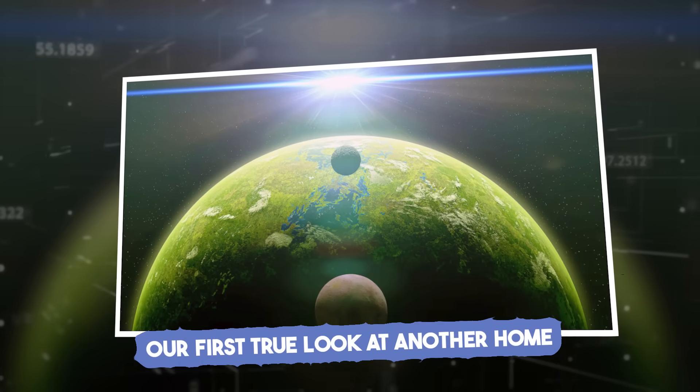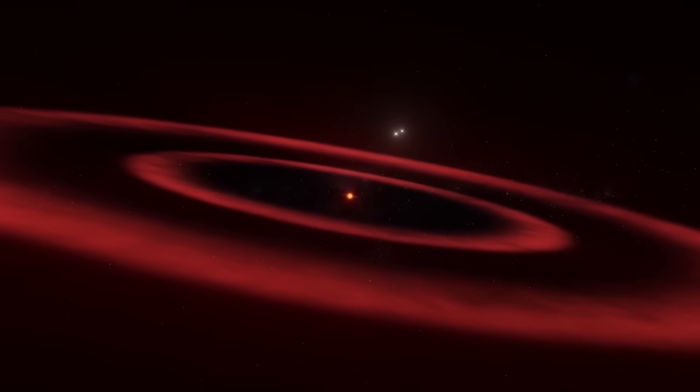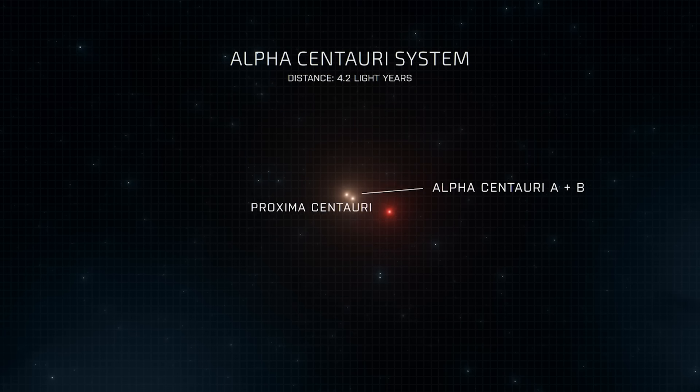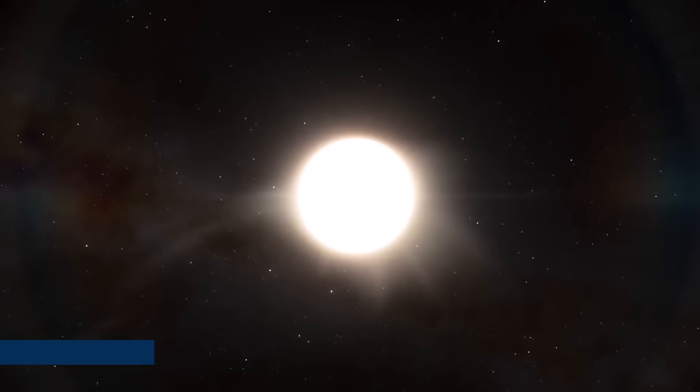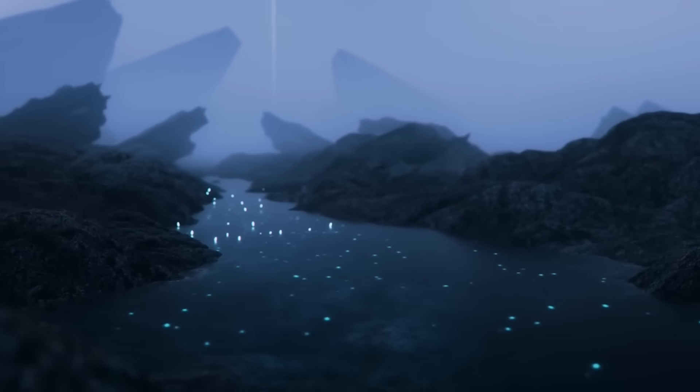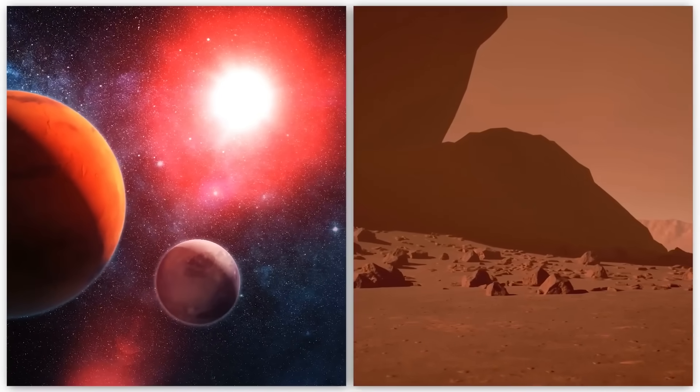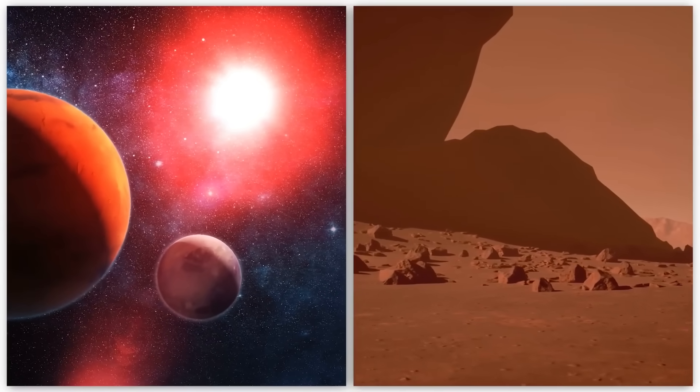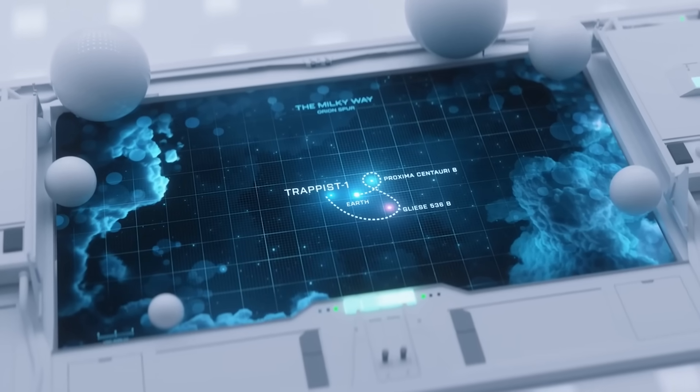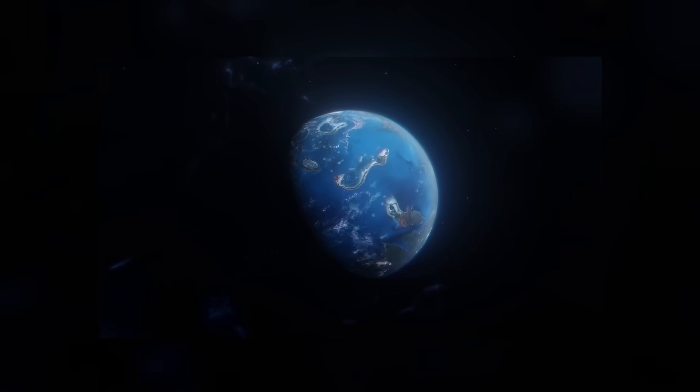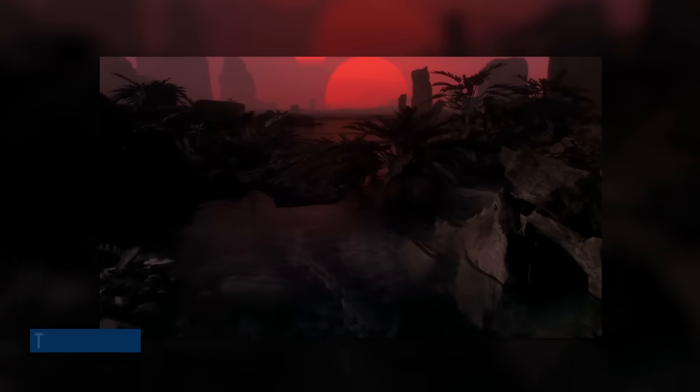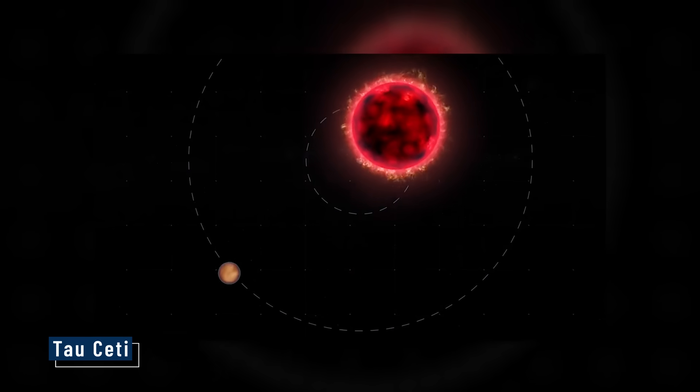Seeing Proxima b like this changes everything. This isn't just a data point, it's a place. First, this is the closest potentially habitable planet we've ever seen, just over four light years away. We now know it's rocky, possibly with a thin atmosphere, and has temperature differences across its surface. Second, it's become a symbol - a test case for how we search for life on other worlds. If we can study Proxima b this clearly, we can study other nearby planets too, like the ones in the Trappist-1 system, or orbiting stars like Tau Ceti.